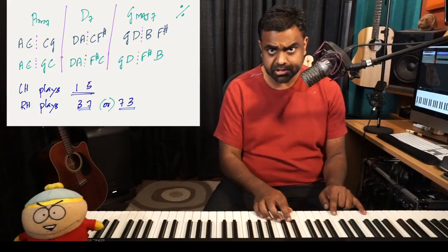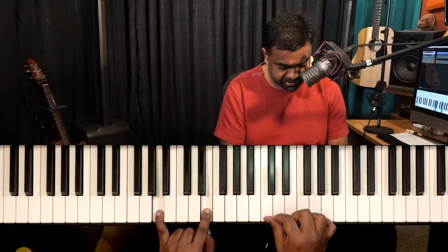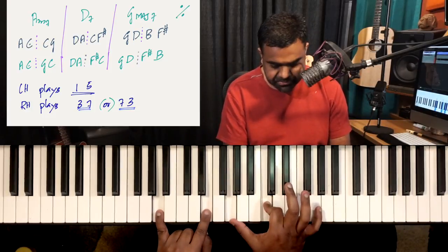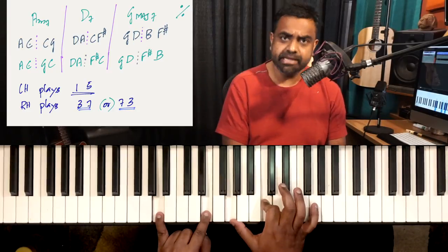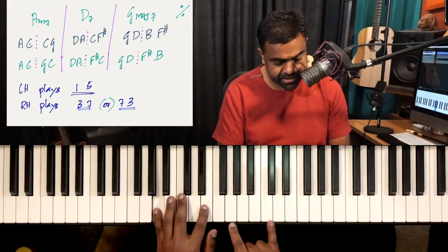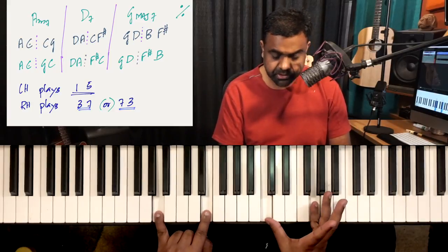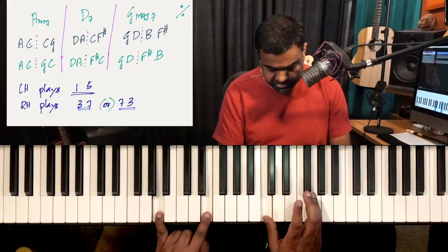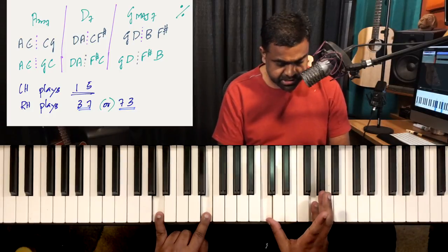Take A minor 7th, the first chord which is the 2 minor 7th. Always play 1-5 in the left hand — that'll spread out the sound. Then in the right hand you can do a 7-3 voicing — that'll be G and C. G and C are the minor 7th and minor 3rd because it's a minor 7th chord. So A, E in the left hand, G, C in the right. Or you could play it as A, E, C, G — that's 1-5-3-7. So either 7-3 or 3-7 — that's your A minor 7th.